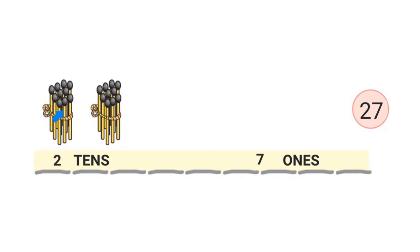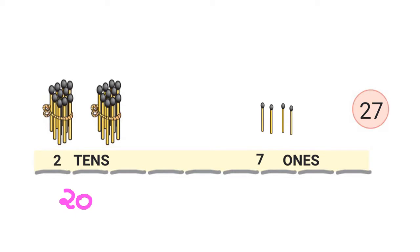Here I have 2 tens which is 20, and I have 7 ones. Let me draw 7: 1, 2, 3, 4, 5, 6, 7. So I have 7 ones. I have 20 and 7 — 27 matchsticks in all.